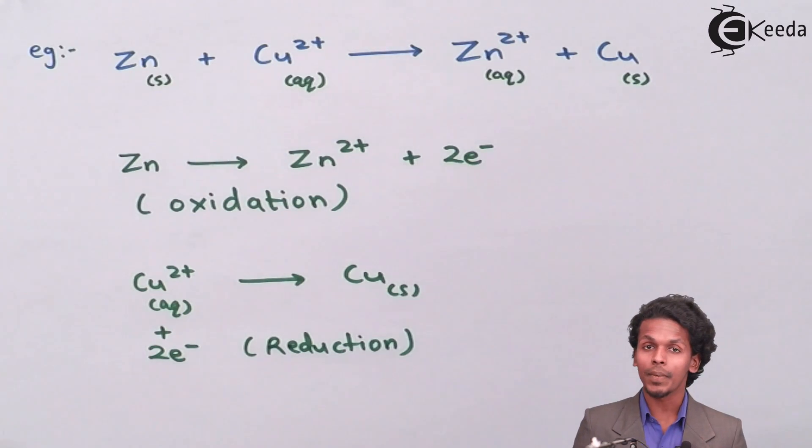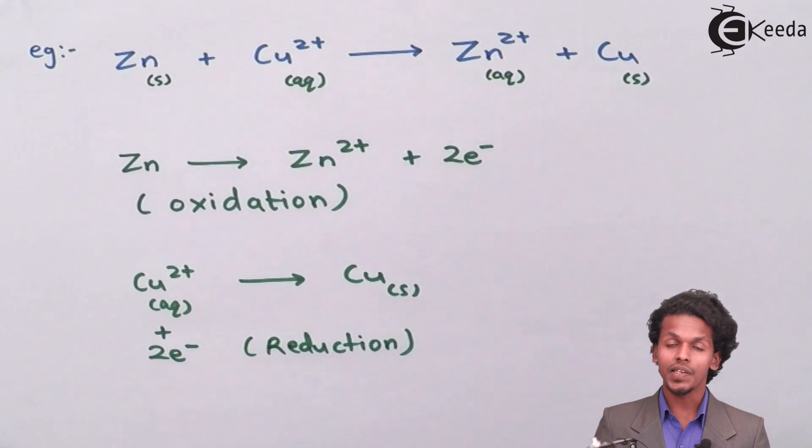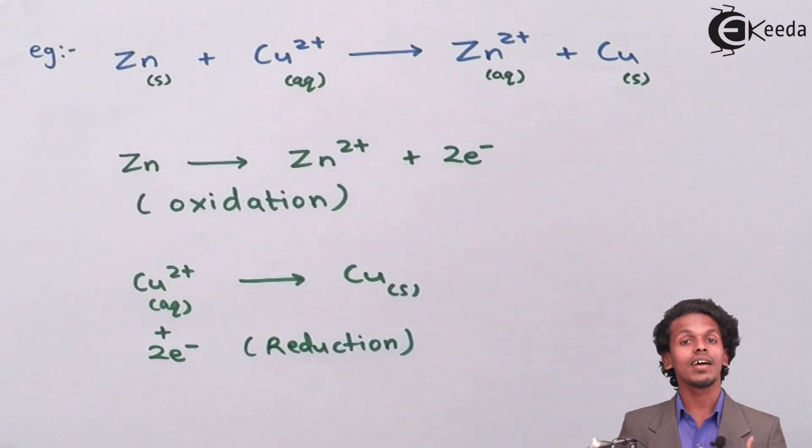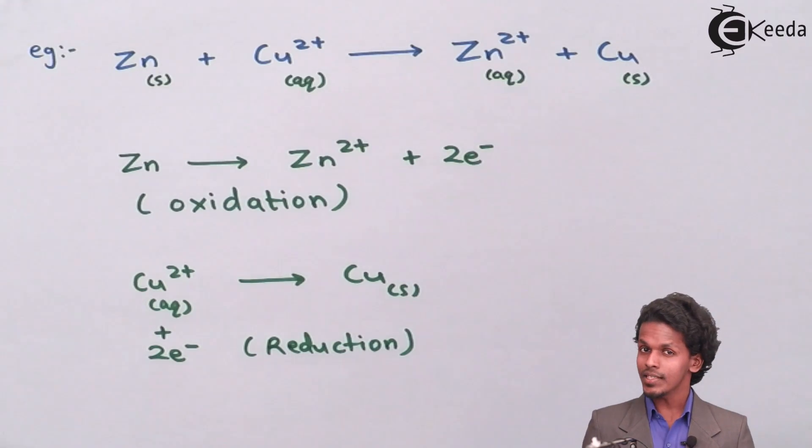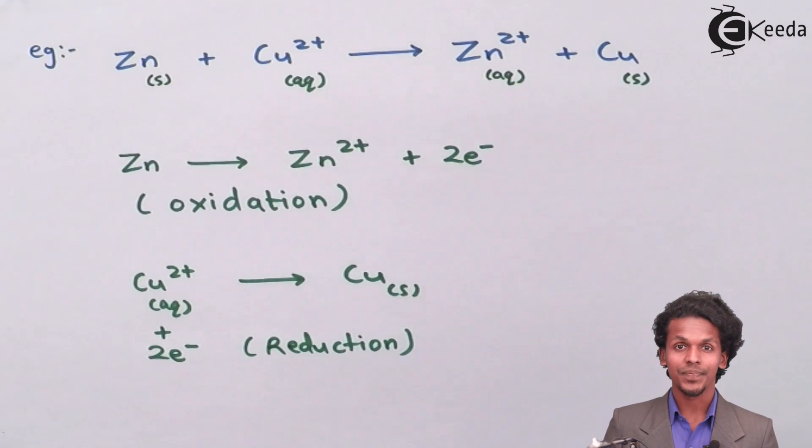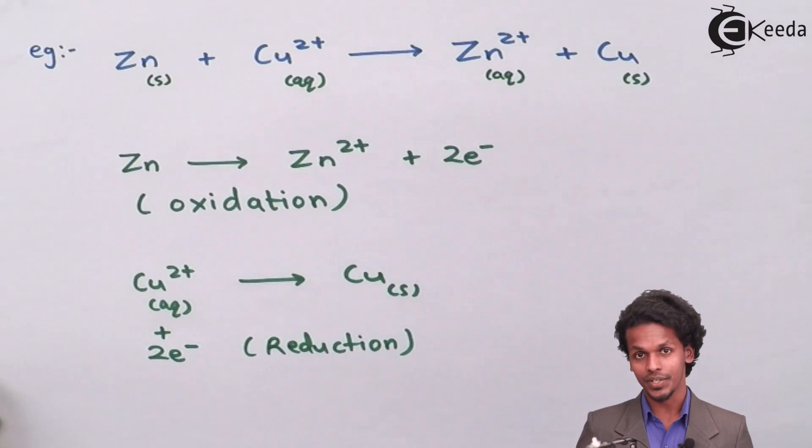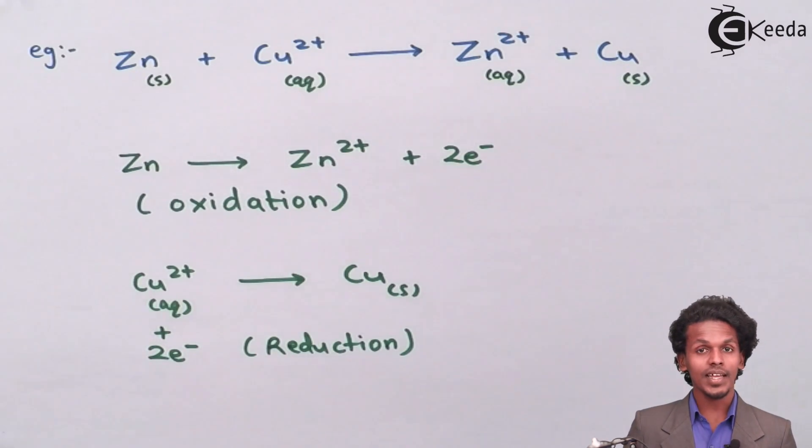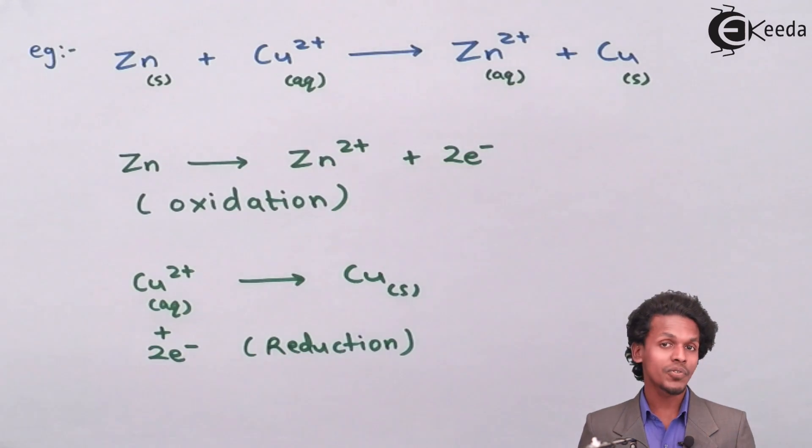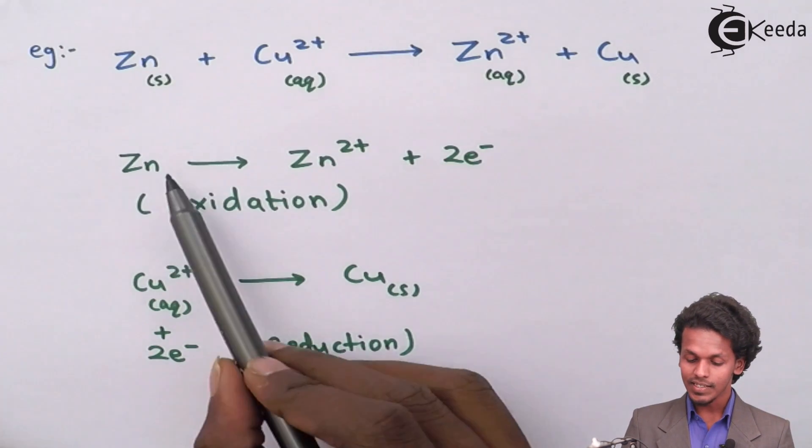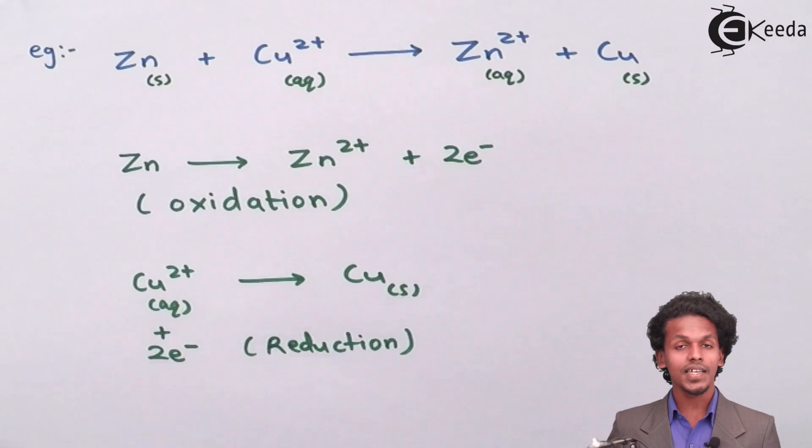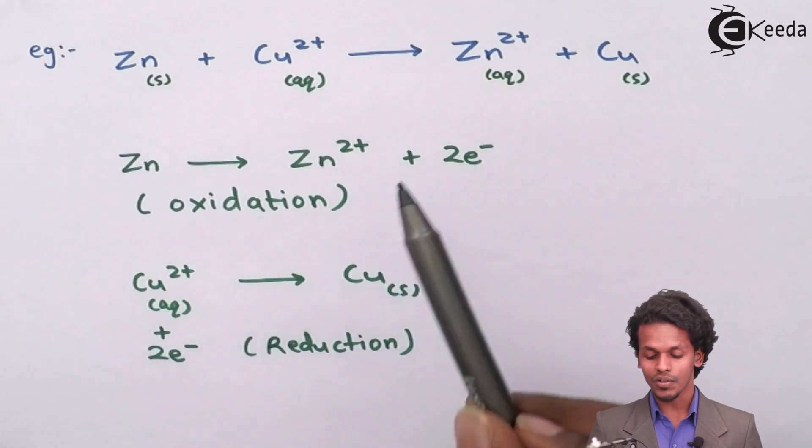As we know, the oxidants are the substance that undergo reduction. So in this case, who is undergoing reduction? Exactly, this Cu 2 plus is undergoing reduction. And which one is behaving oxidation process? In this case, Zn, that is zinc, is showing oxidation process.